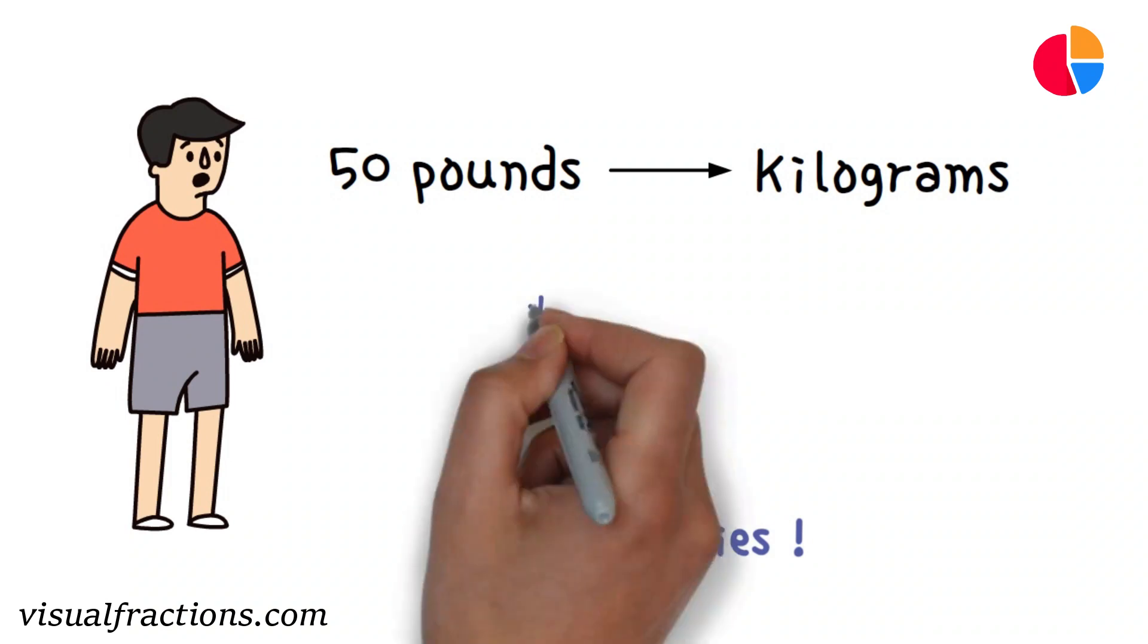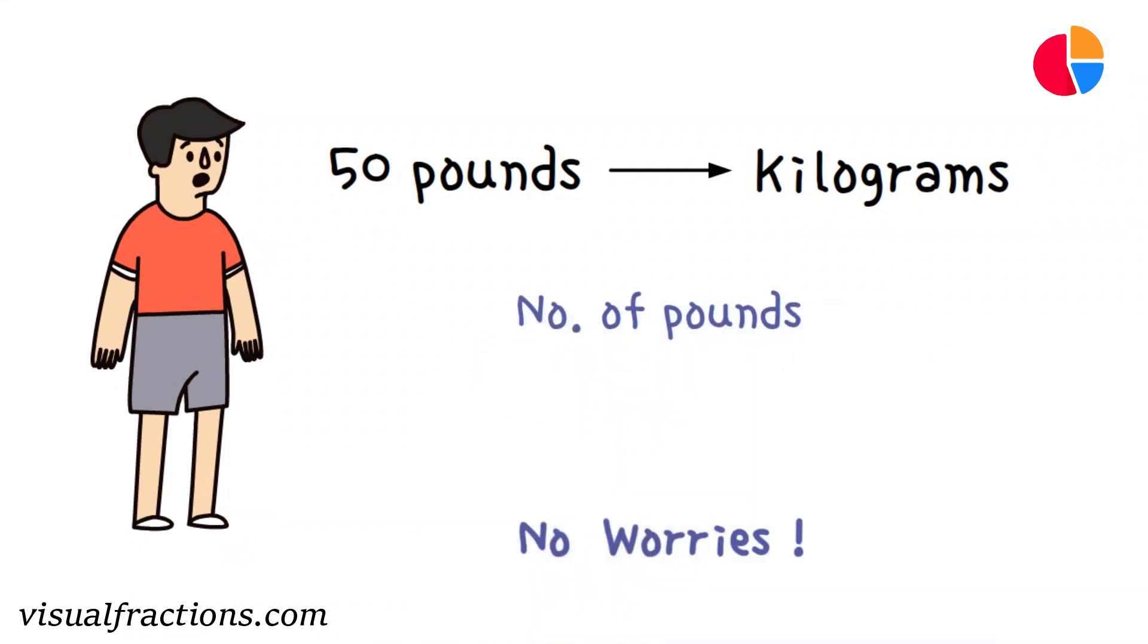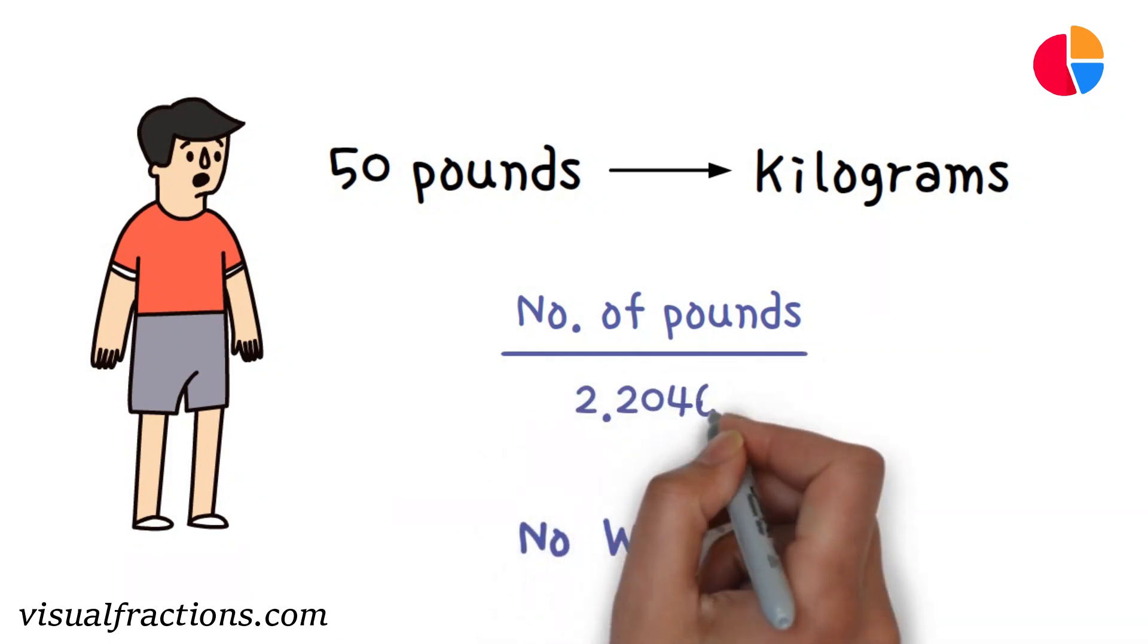To convert pounds to kilograms, you need to divide the number of pounds by the conversion factor of 2.20462.